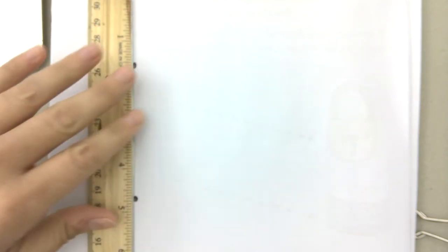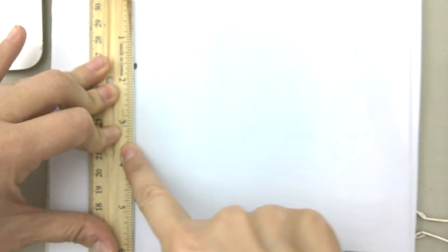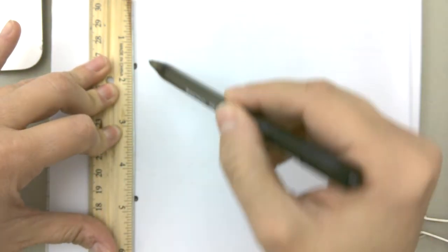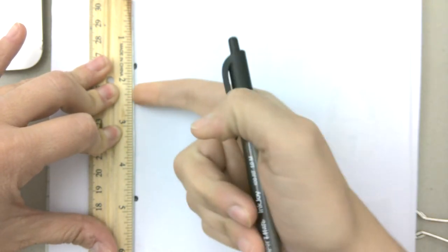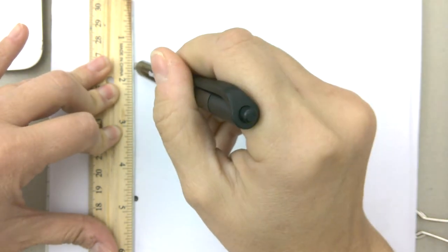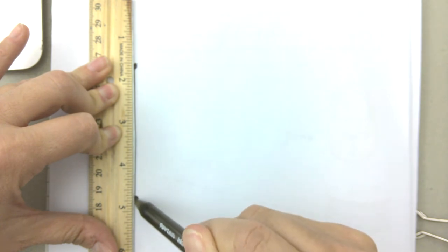With your left hand or your non-dominant hand, you're going to press down so that the ruler does not move. Take your pencil or pen and put it on the first dot, then press up against the side of the ruler as you trace down and stop at the dot.